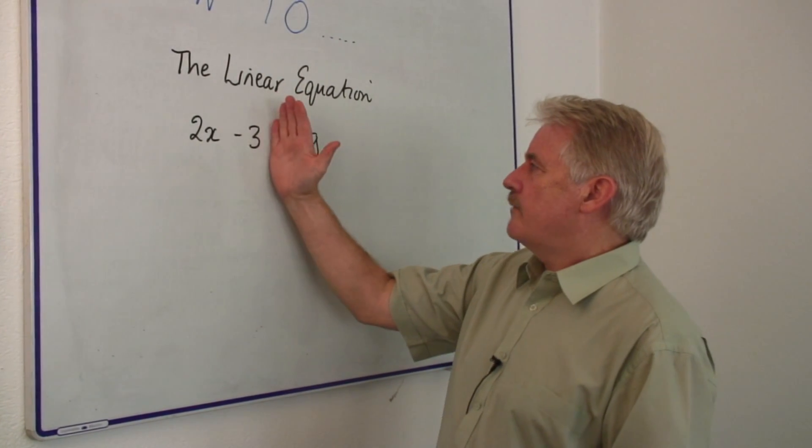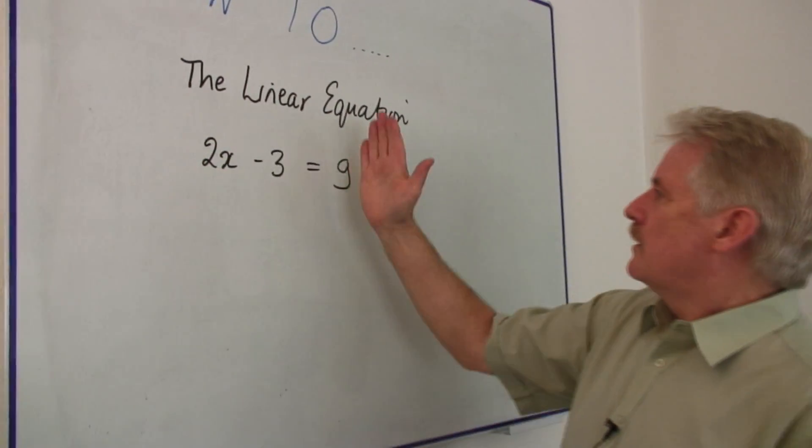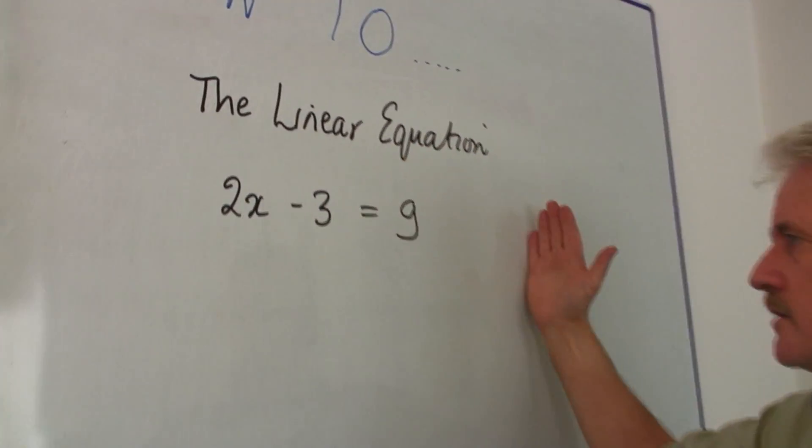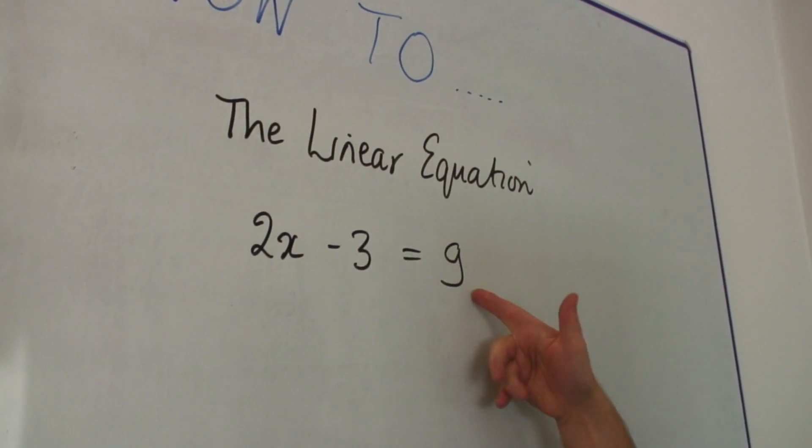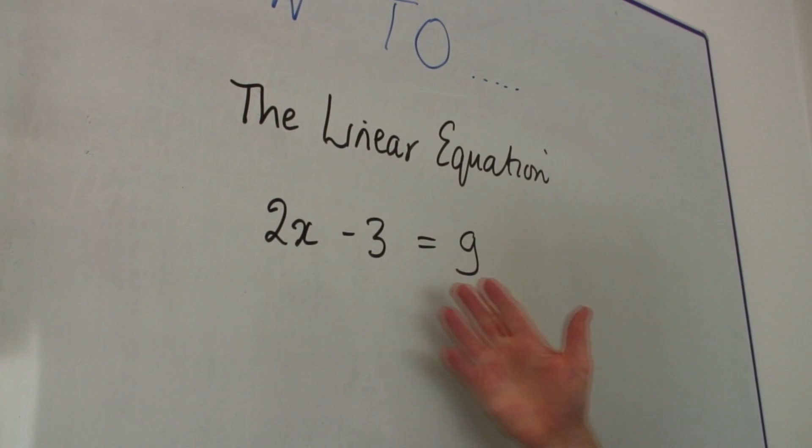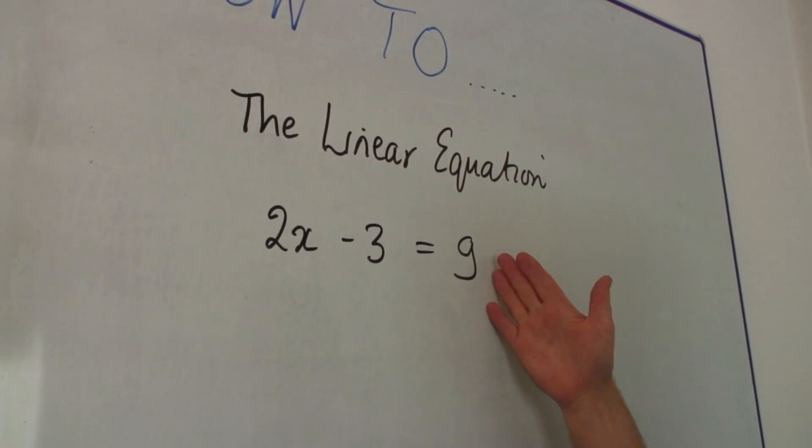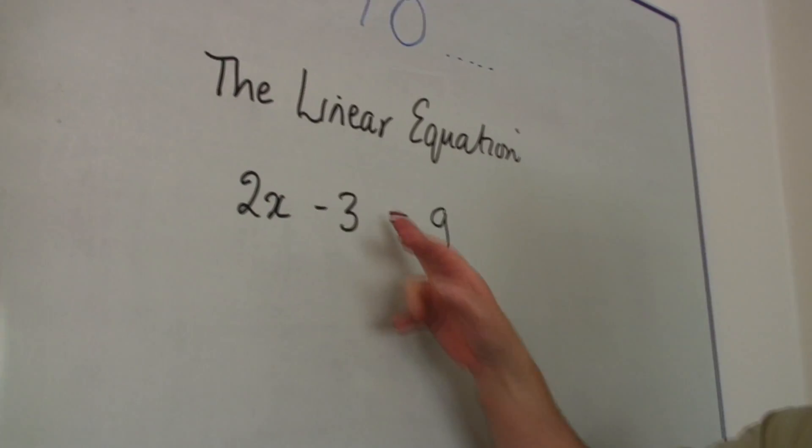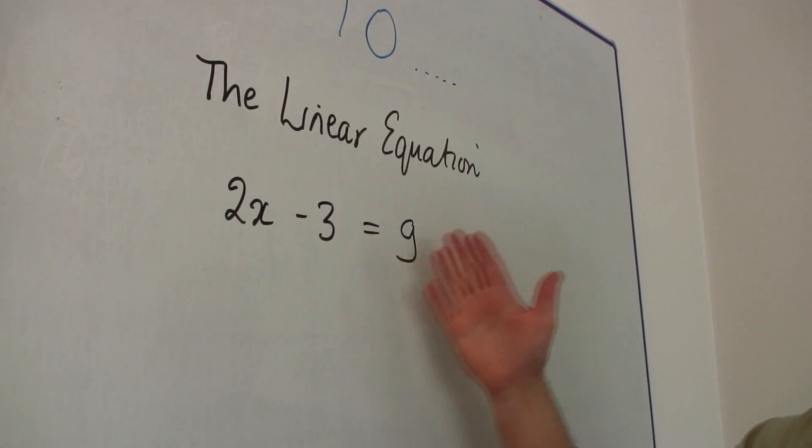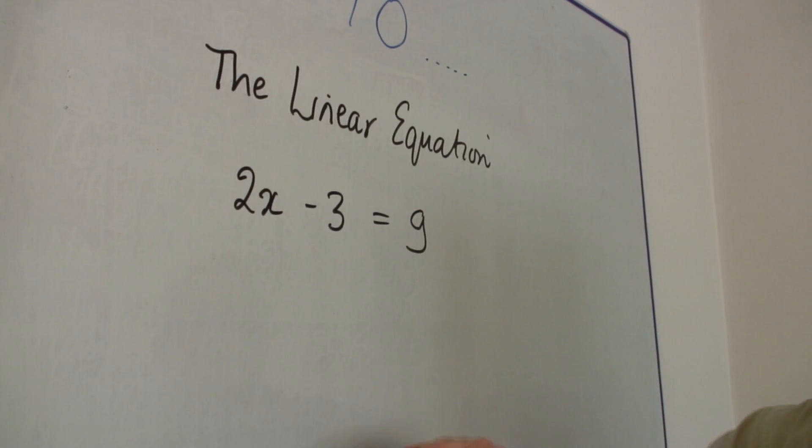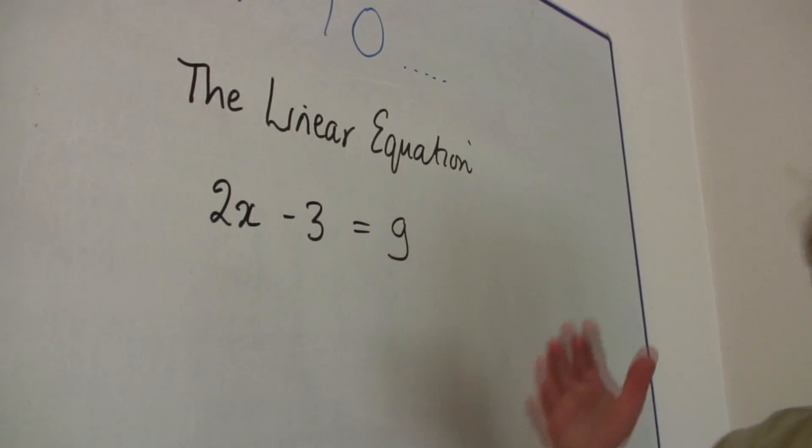What it says is whatever is on this side is equal to whatever is on that side. So 2x minus 3 is equal to 9. It's not the same as 9, but it is equal to 9. So you don't know what x is, but it doesn't matter. You know that 2x minus 3 and 9 are equal.